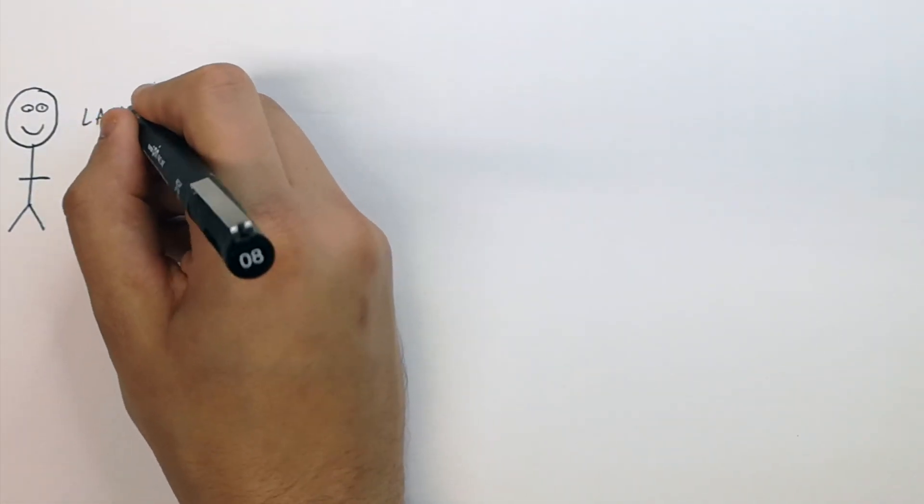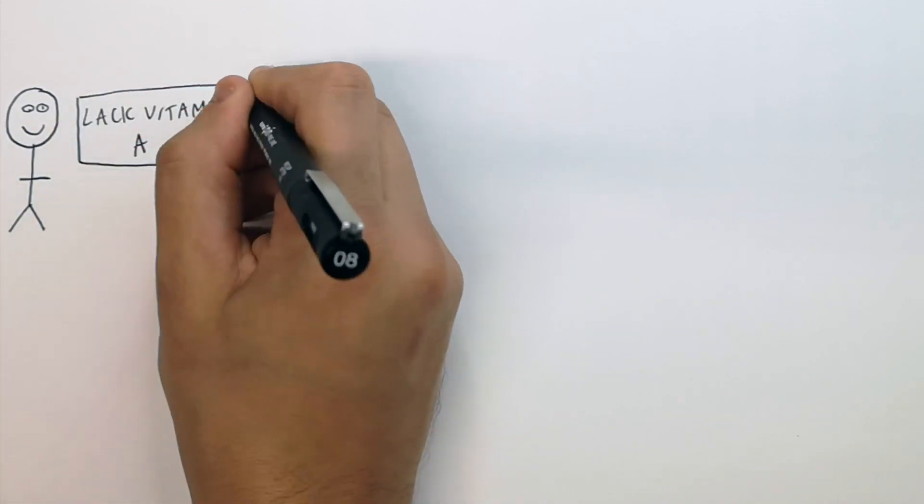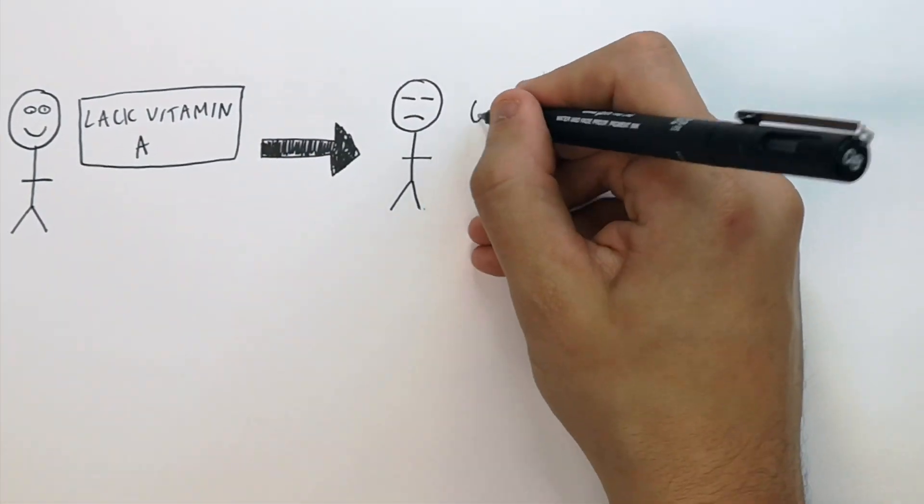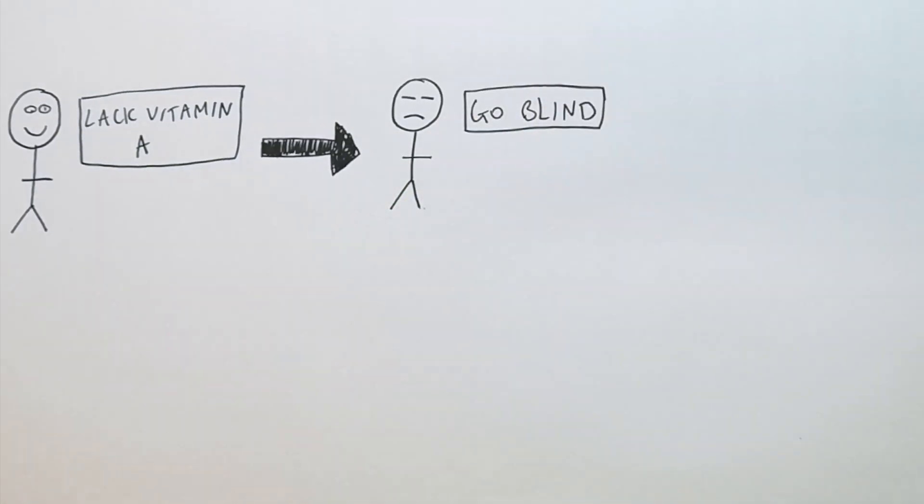So someone who lacks vitamin A can go blind. If they lack enough vitamin A, this person can go blind.